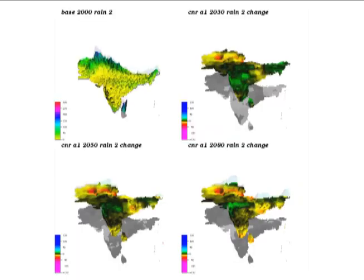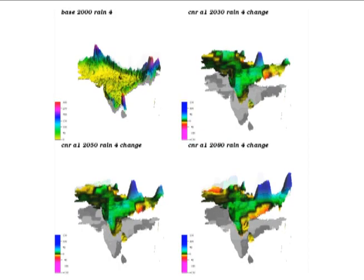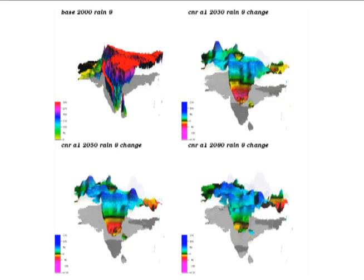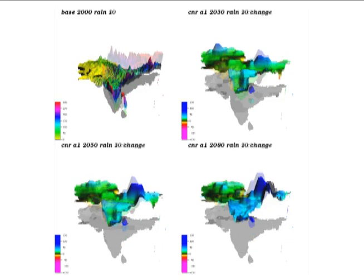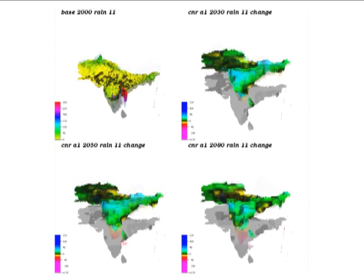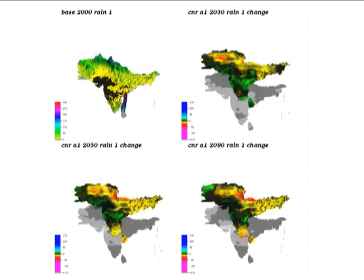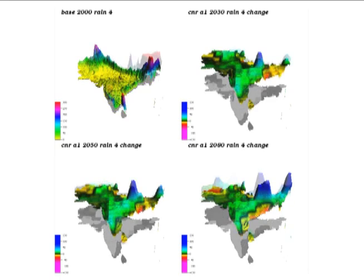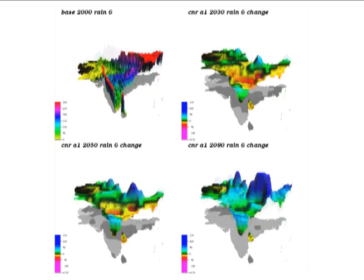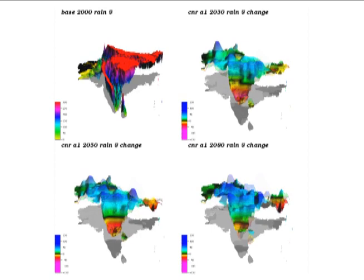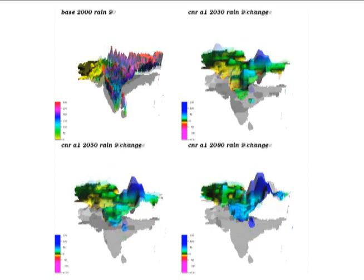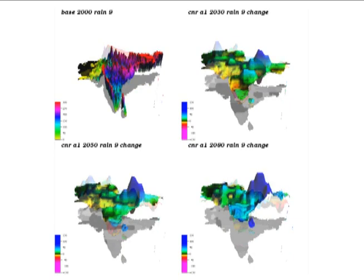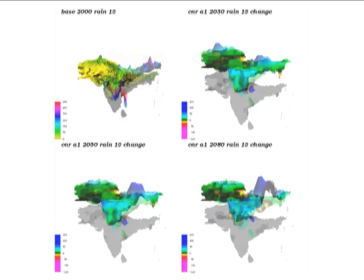The next three graphs — upper right, lower left, and lower right — convey information about changes in precipitation from the base period in 2000. The upper right shows the change from 2000 to 2030, and the lower left shows the change from 2000 to 2050. In all of these change maps, elevation and colors again convey the same information: the amount of additional or declined precipitation relative to 2000.